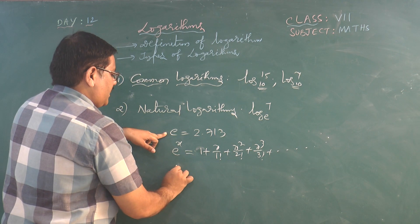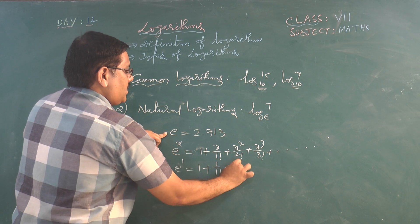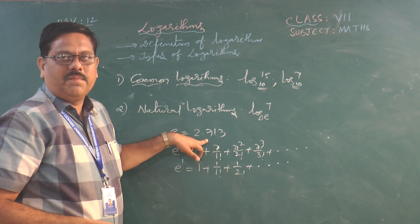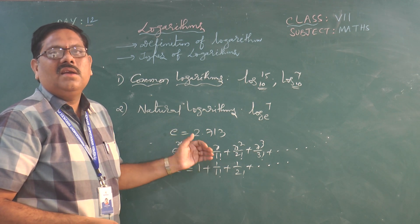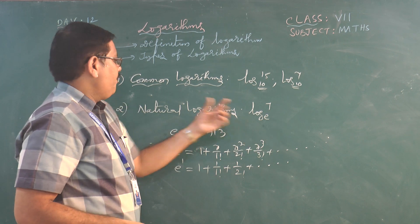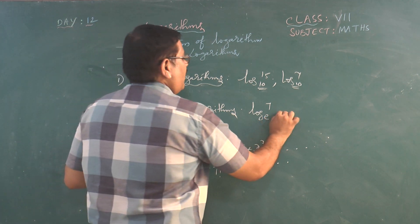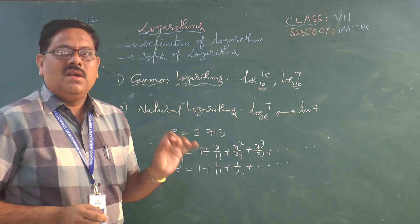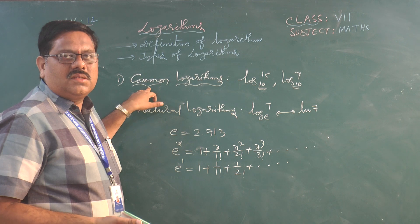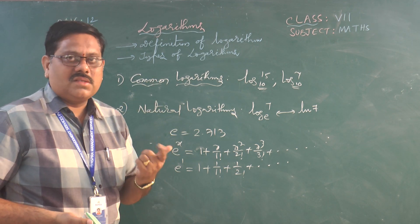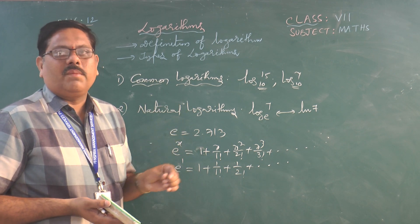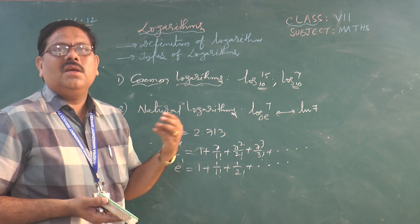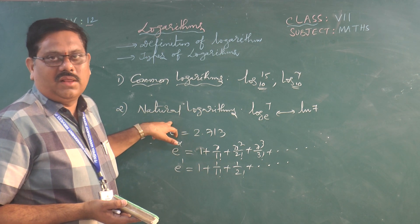The value of e comes from the exponential series: e^x = 1 + x/1! + x²/2! + x³/3! + ... Substituting x = 1 and summing the series gives approximately 2.713. For example, log_e(7) is a natural logarithm, also written as ln(7). Natural logarithms are also named after mathematician John Napier, so they are called Napierian logarithms.